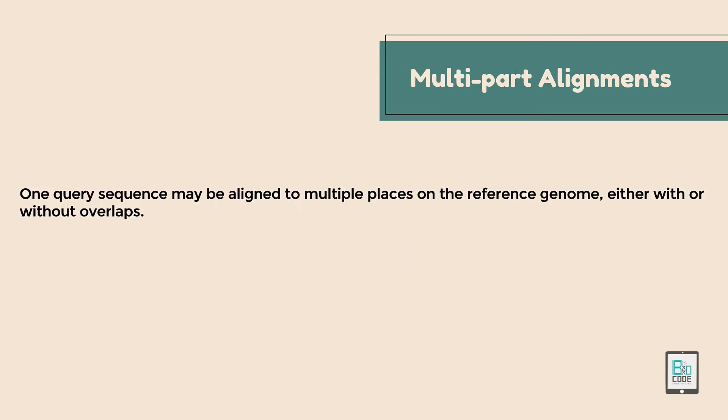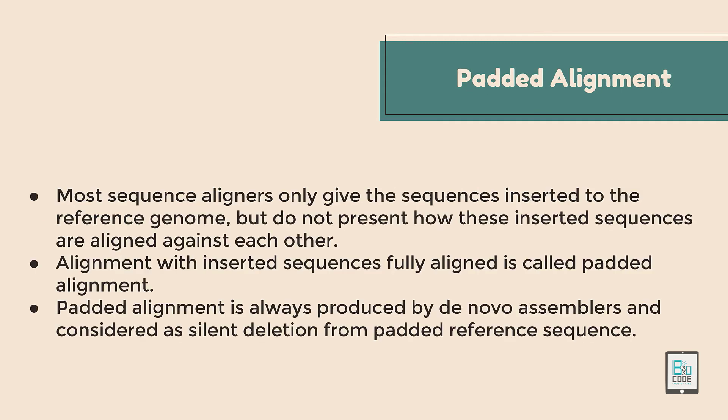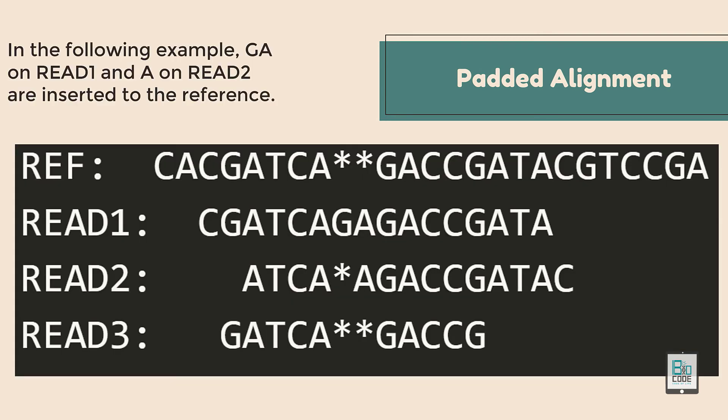In multi-part alignments, one query can align to multiple places on the reference genome, with or without overlaps. Padded alignments are the final type — most sequence aligners provide the inserted regions of the genome but do not show how those inserted regions are positioned relative to the other aligned regions. Padded alignments present the actual representation of the alignment and where it is present.